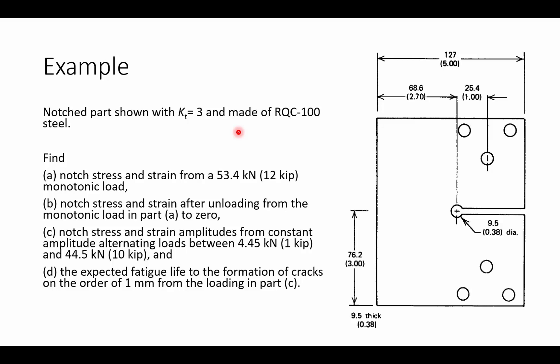In the example, we're asked to do a couple of things. First, we're asked to find the notch stress and strain from a 12-kip monotonic loading. Part B asks us to find the notch stress and strains after unloading from the monotonic loading in part A. So that asks us, will there be some residual plastic strain once we've unloaded? Case C asks us to find the notch stress and strain amplitudes from a constant amplitude alternating load between 1 and 10 kips—if we have fatigue cycling, what are the notch stress and strain amplitudes? And finally, D asks us to find the expected fatigue life to the formation of a crack on the order of 1 millimeter from the loading in part C.